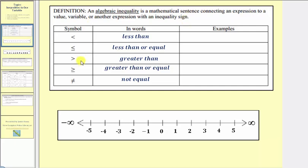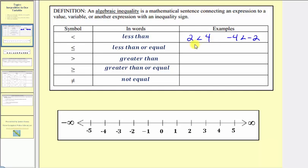Let's begin by reviewing the inequality symbols or signs. The first symbol is the less than symbol. For example, two is less than four. On the number line, two is to the left of four, and therefore two is less than four. Looking at negative values, we can also say negative four is less than negative two.